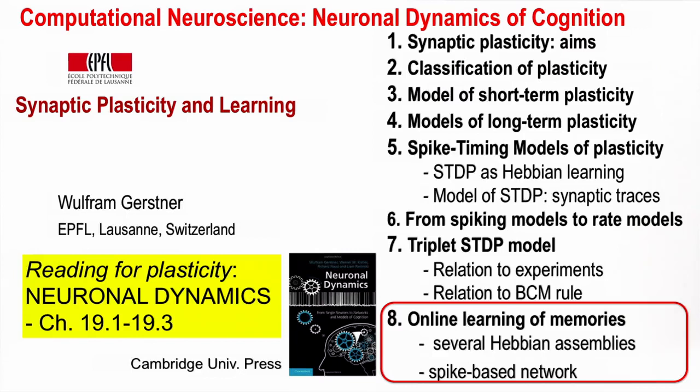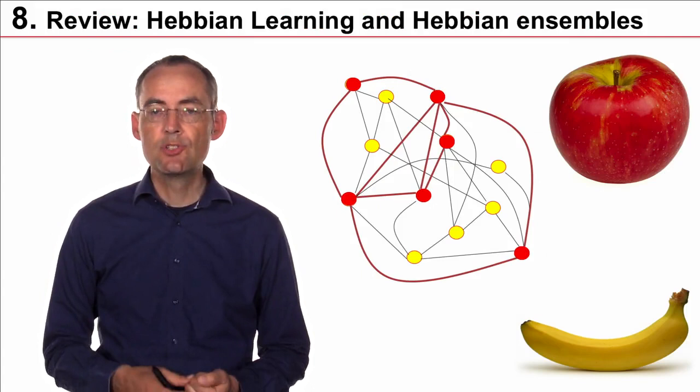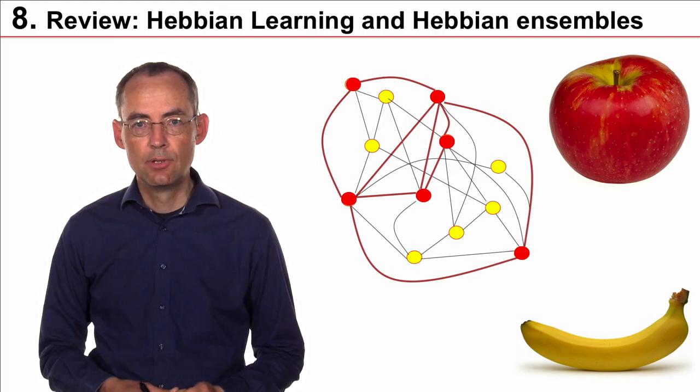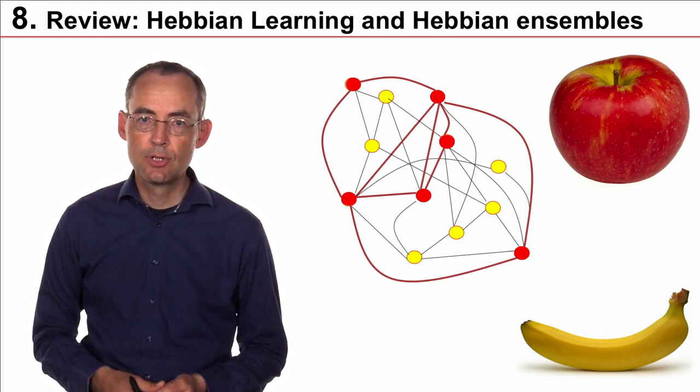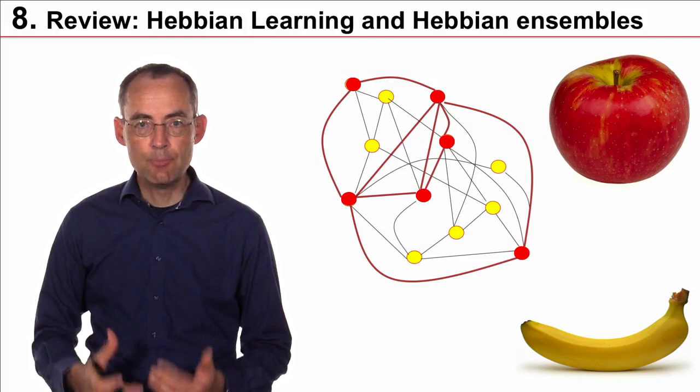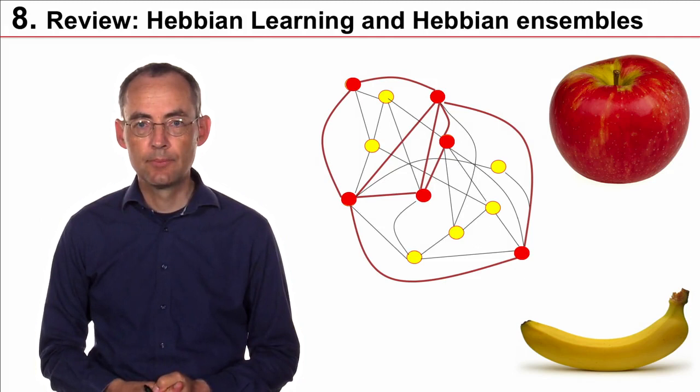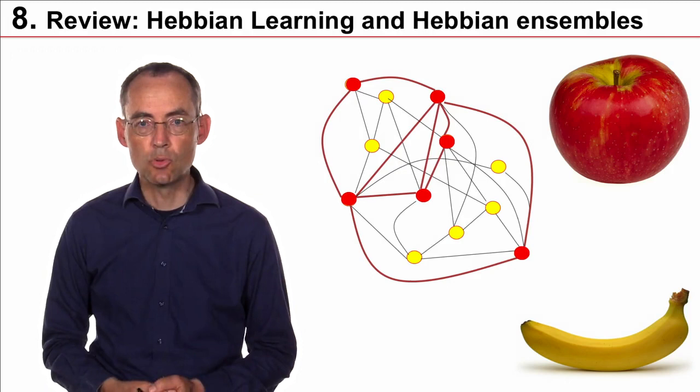When I introduced synaptic plasticity at the beginning of this week's series, I had several tasks in mind. One of these was receptive field formation, we have covered this one. And the other one was memory, storing memories. An important concept here is the concept of the Hebbian assembly that we have seen before. The question now is, can I really use these synaptic learning rules to store Hebbian assemblies, and not just one, but several ones?